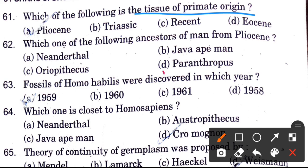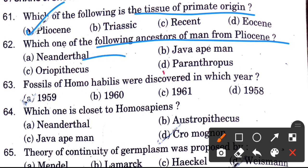Which one of the following is the tissue of primate origin? Options are Pliocene, Triassic, Recent, and Eocene. The answer is Pliocene. Which ancestors of men are from Pliocene? Options are Neanderthal, Java Ape Man, Australopithecus, and Paranthropus. The answer is Paranthropus.